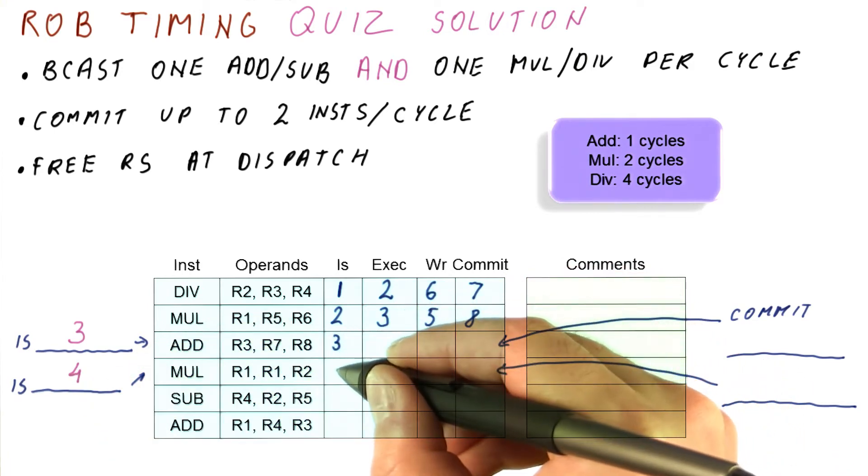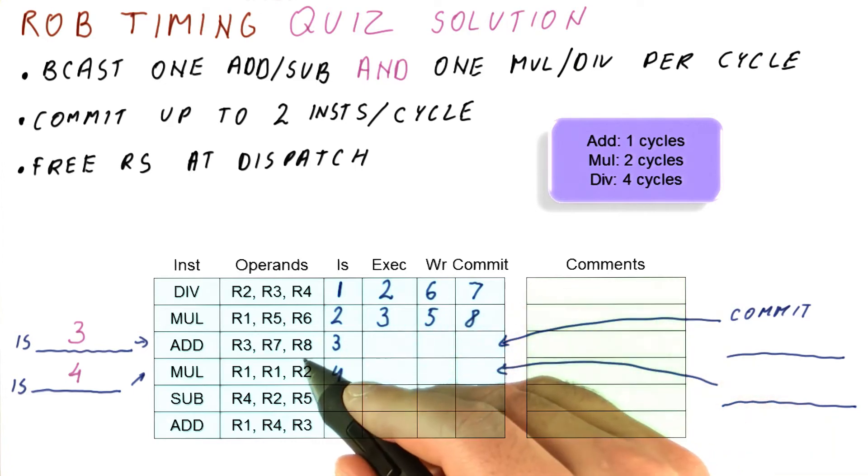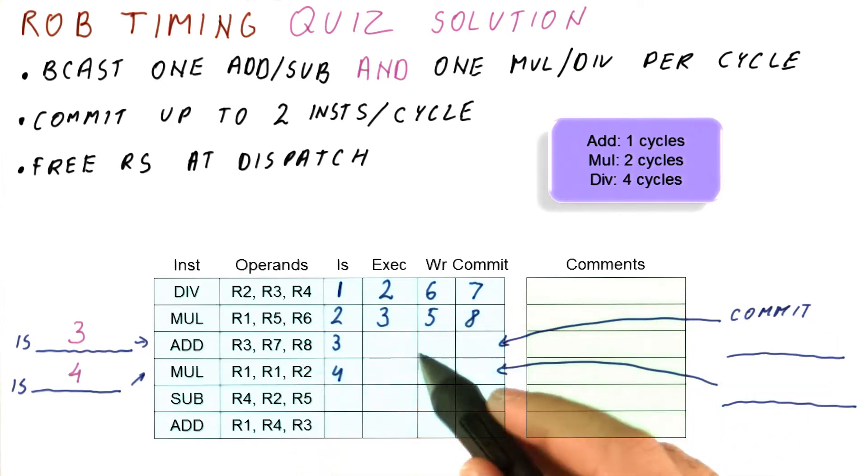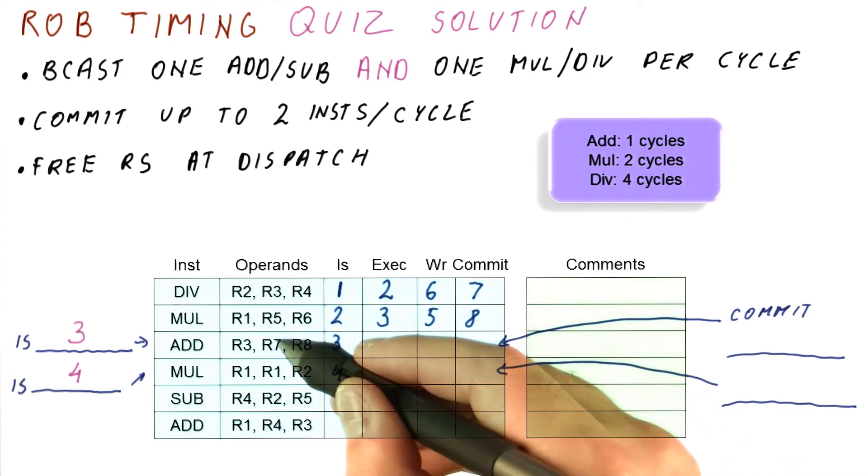Let's now put this here, so we have three and four. When does this execute? Because to figure out the commit, we actually have to figure out also when do they execute and write results.